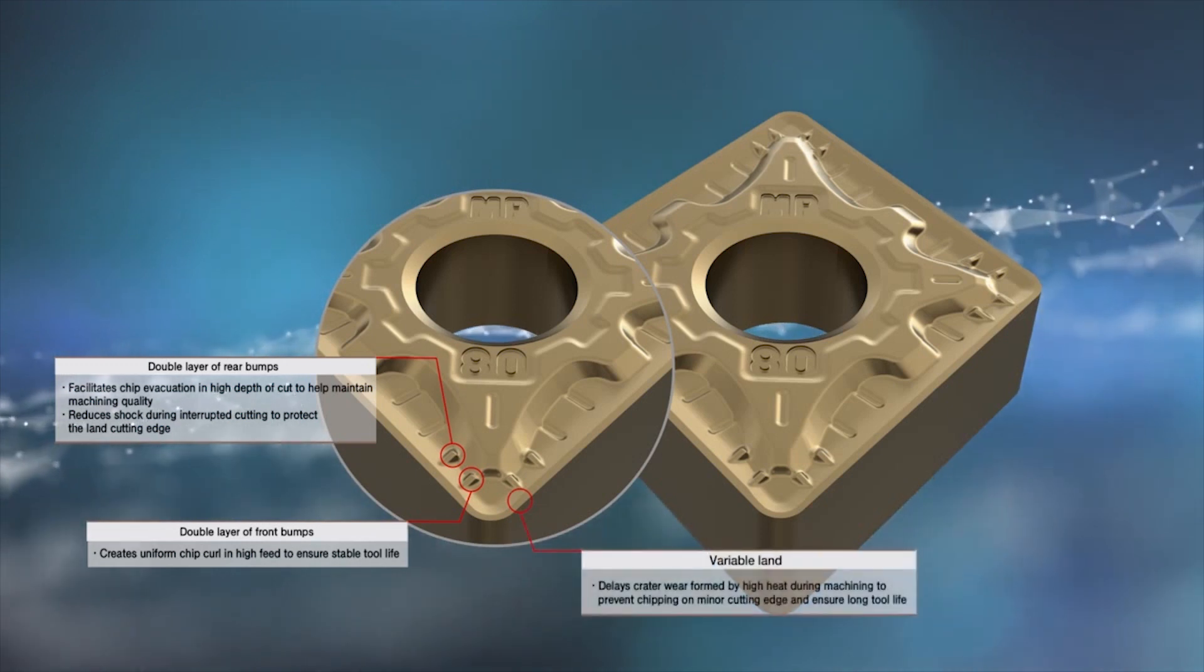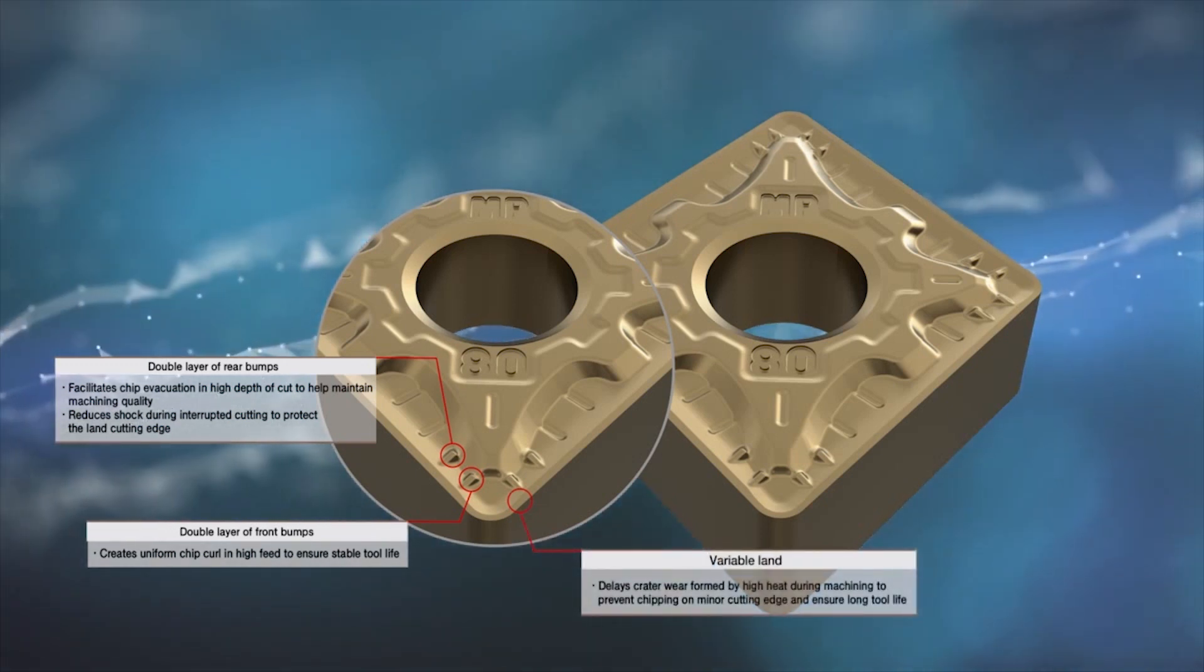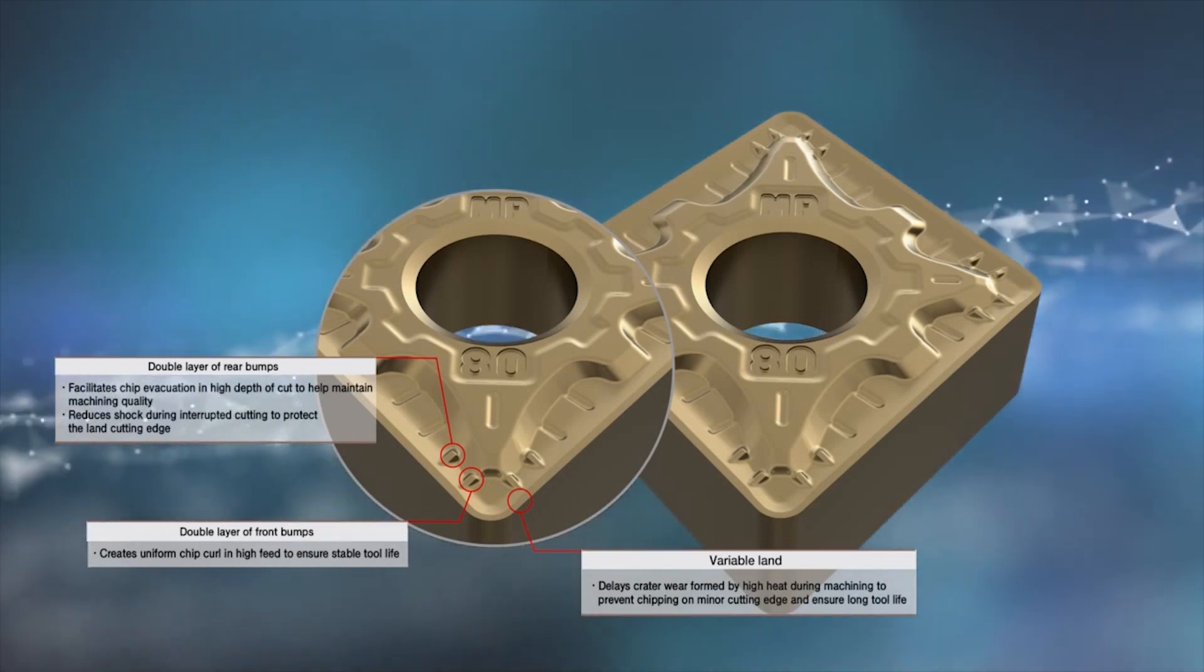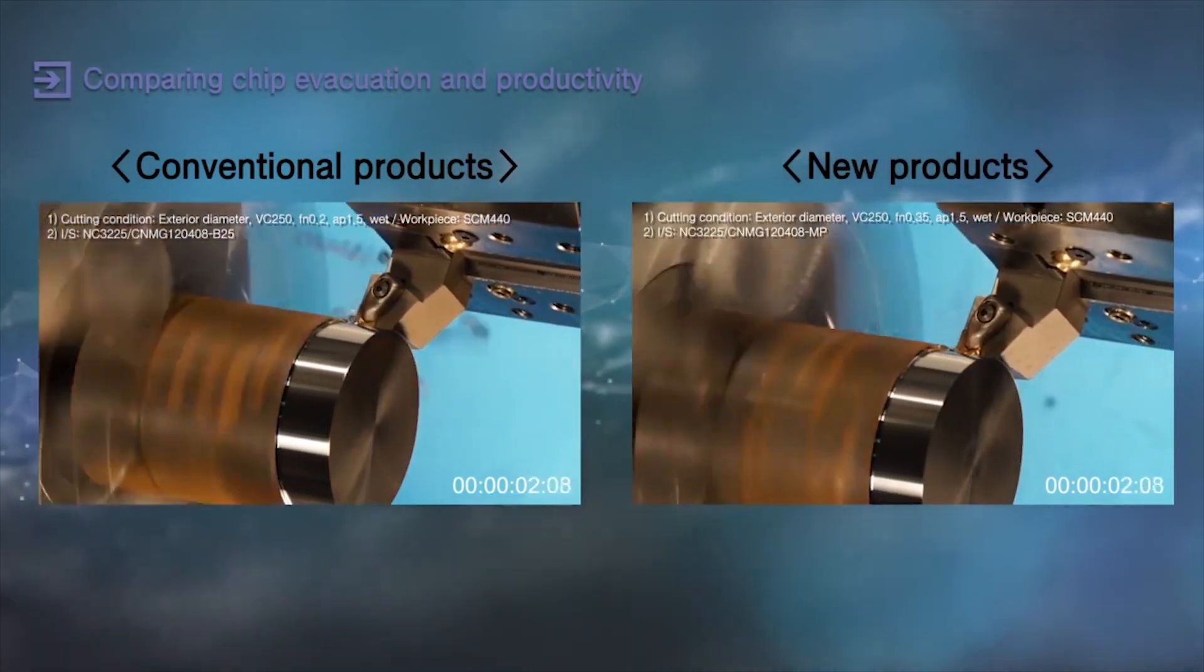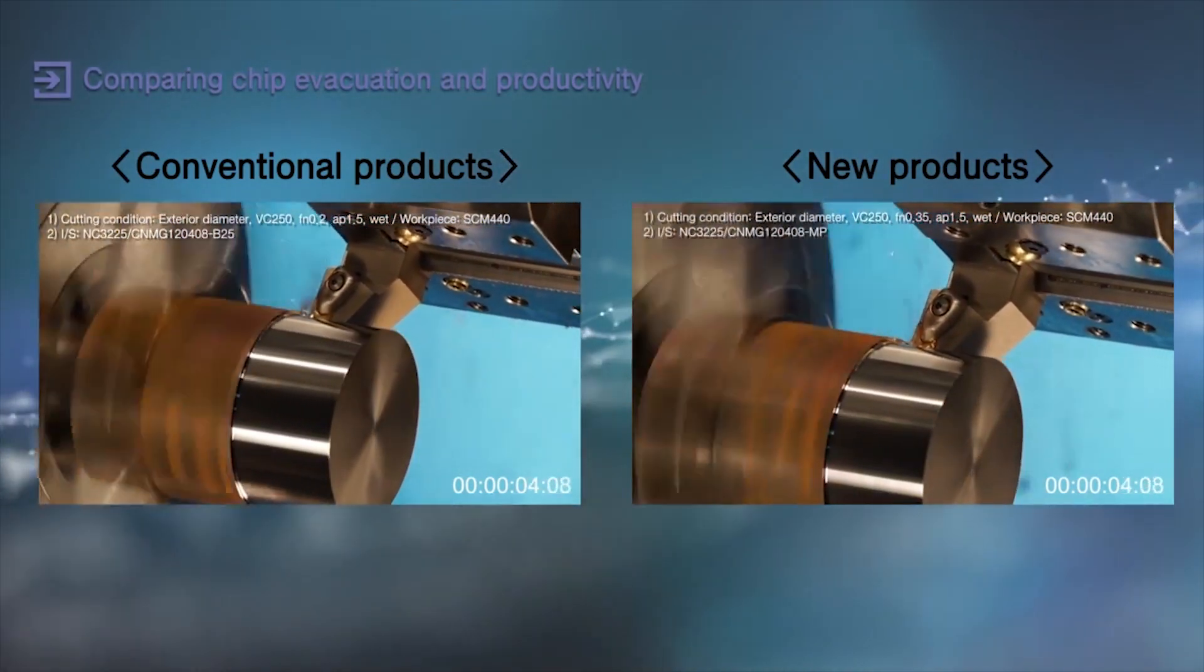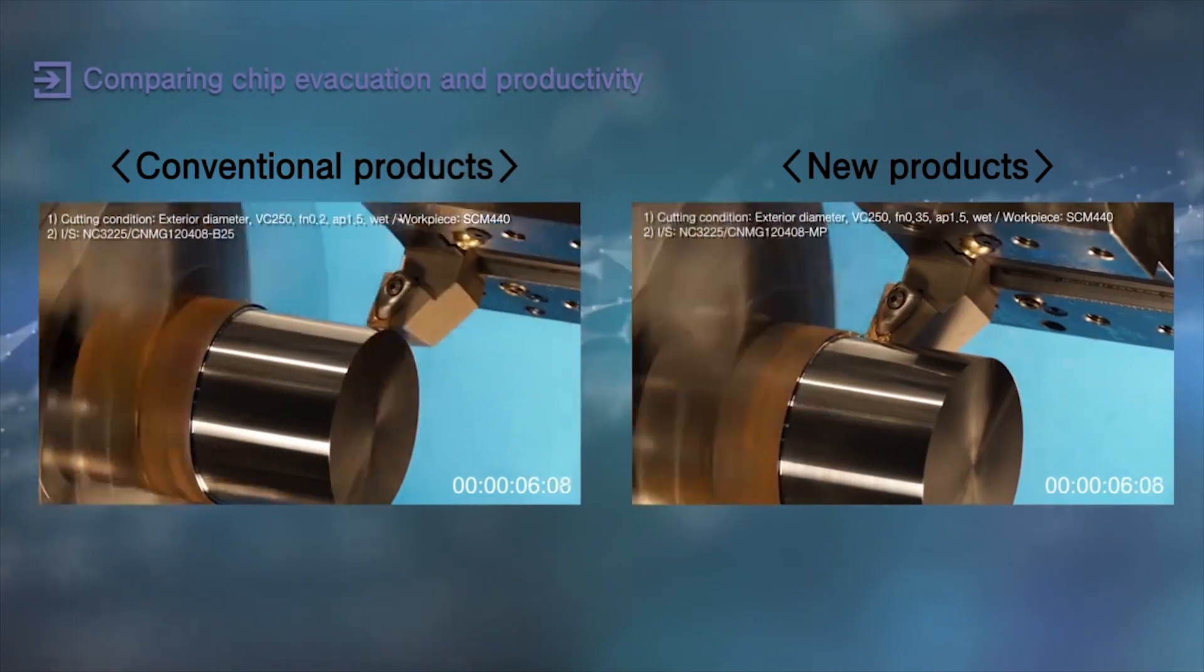Double layers of bumps in the front side help create a uniform chip curl to ensure longer tool life. A variable land design delays crater wear due to the high heat generated during machining by preventing edge chipping in the minor cutting edge and thus ensuring longer tool life.